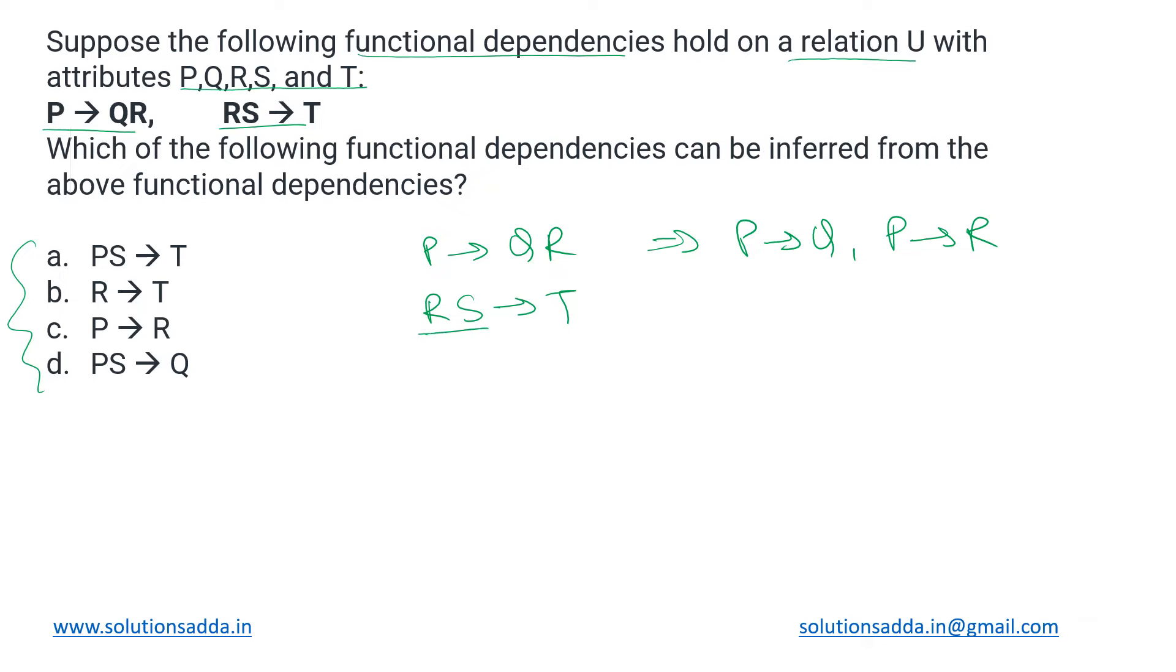So now, based upon these, we write the closure of all the attributes. P star is equal to, it will be able to derive itself, then Q and R. Then for Q, R, S, and T, we do the same thing.